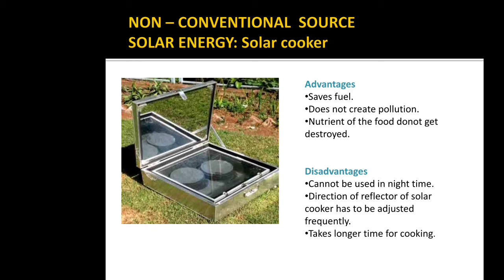The disadvantages of the solar cooker are that it cannot be used at night or on cloudy days, the direction of its reflector has to be adjusted frequently, and it takes a longer time for cooking. These are the advantages and disadvantages of the solar cooker.